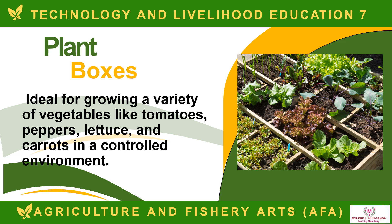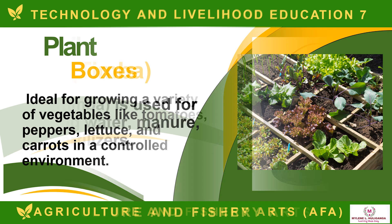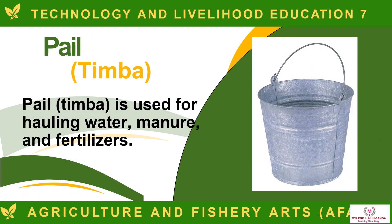Plant Boxes are ideal for growing a variety of vegetables like tomatoes, peppers, lettuce, and carrots in a controlled environment. The Pail or Timba is used for hauling water, manure, and fertilizers.